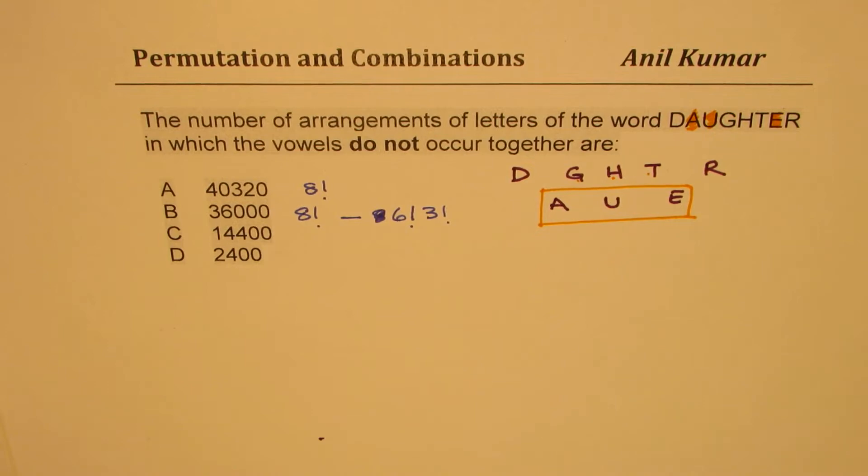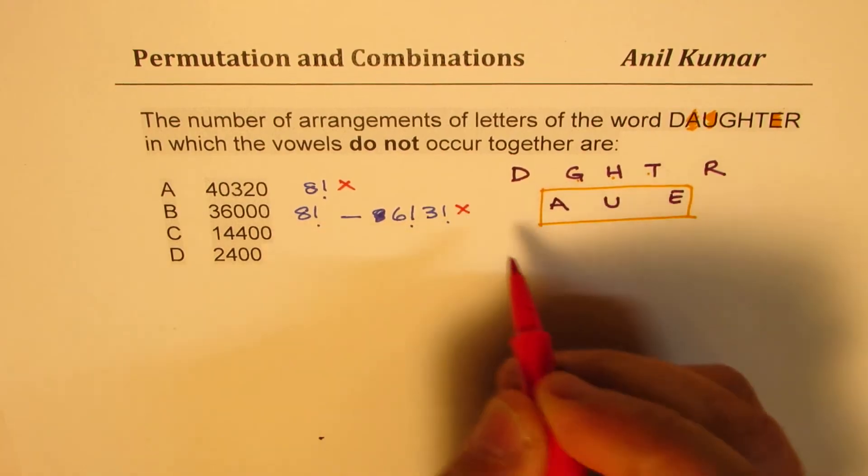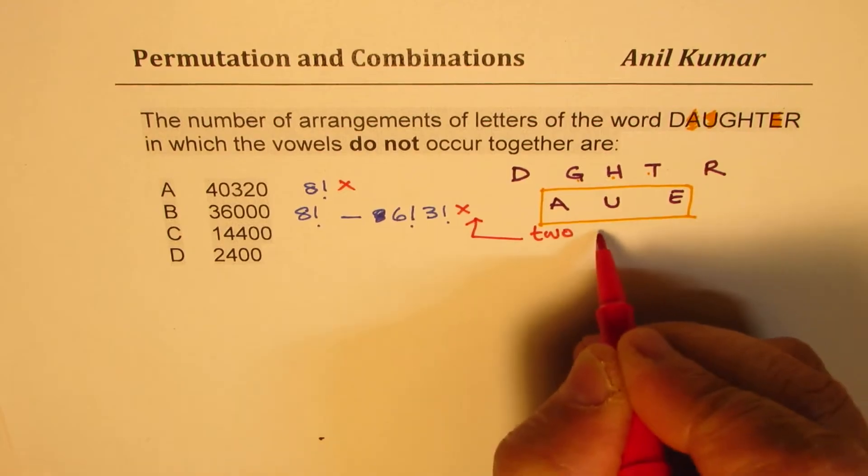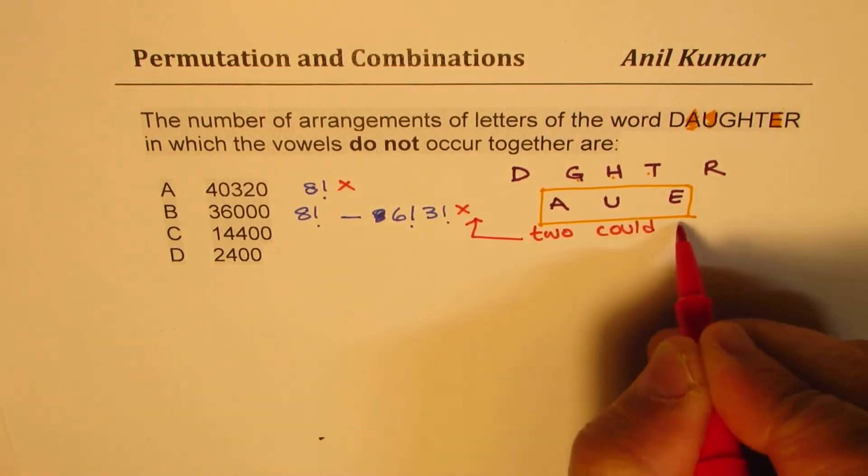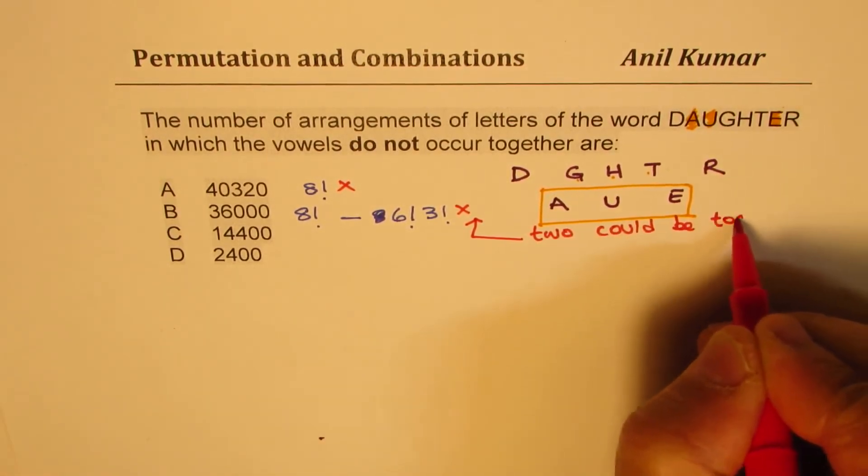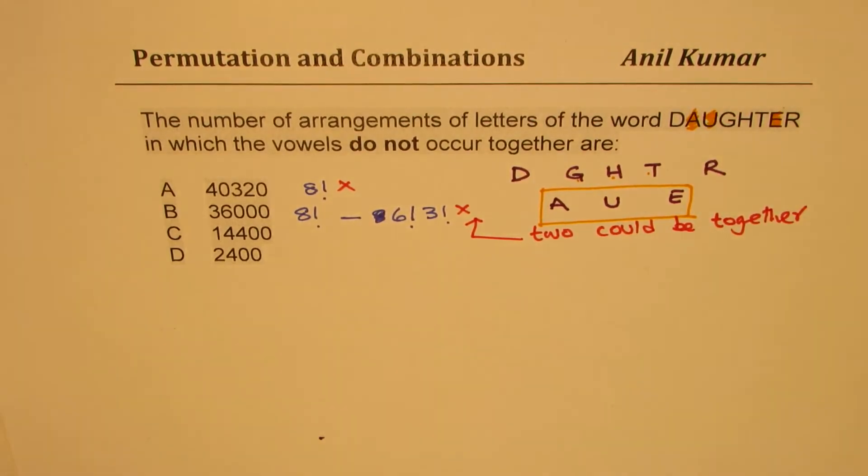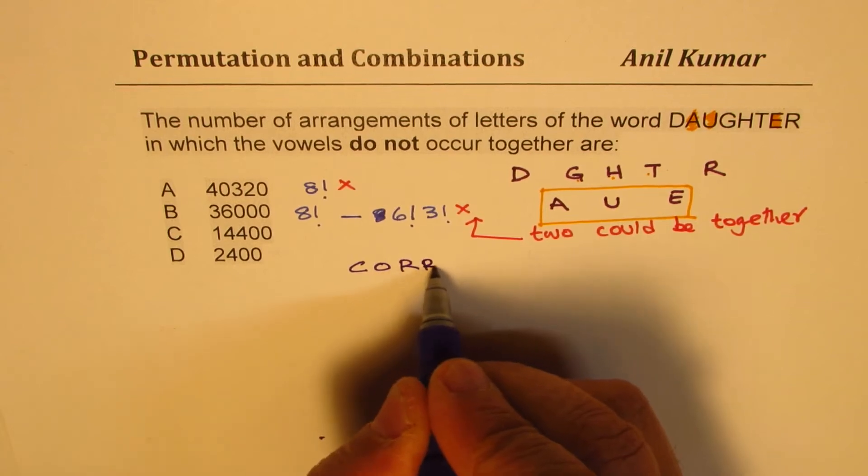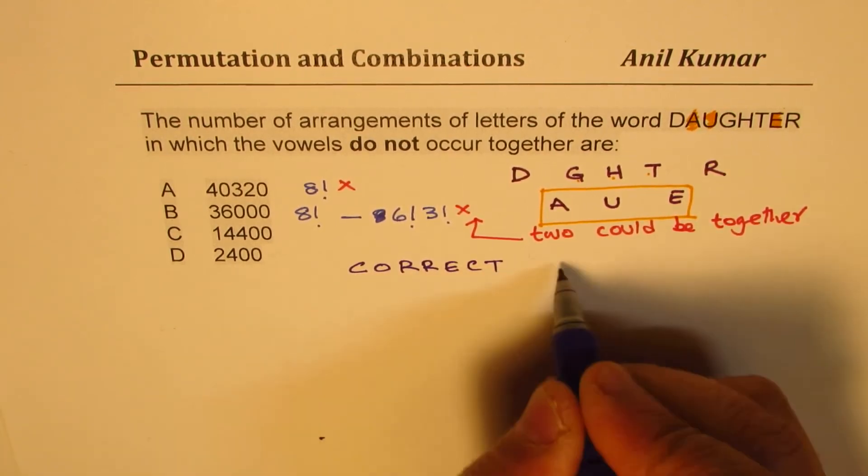Well, two of them could be together, so this is wrong, and this is also wrong, because in this case two could be together. So what is the right solution? That is what we are going to look into now. Let's look into the correct solution. You can also pause the video, answer the question, and then look into my suggestions.